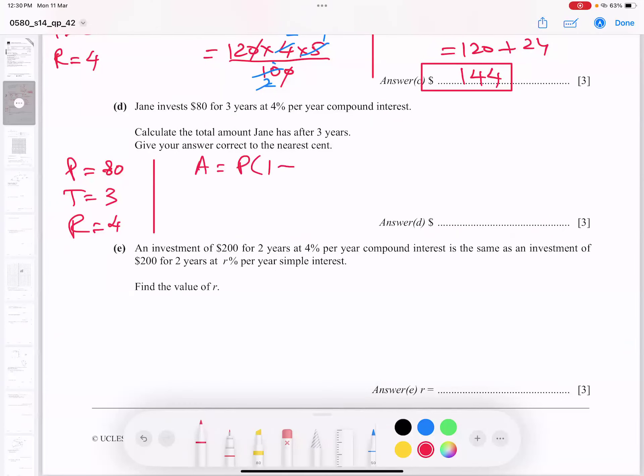A is equal to P times 1 plus R over 100 to power T. So let's plug in all numbers, 80 times here, 1 plus rate of interest 4 over 100 to power is 3. If I plug in the values directly in the calculator, answer is coming 89.98912.